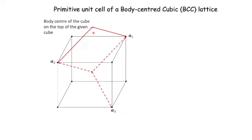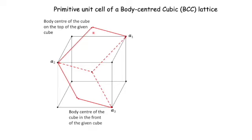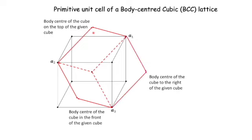Similarly, by adding A2 and A3 we come to a point which is at the body center of a unit cell in front of the given cube. And finally, adding A3 and A1 we arrive at a point which is at the body center of a unit cell to the right of the given cube.